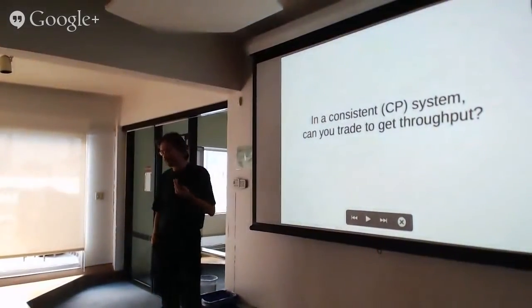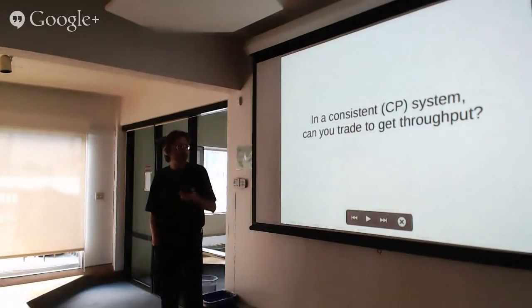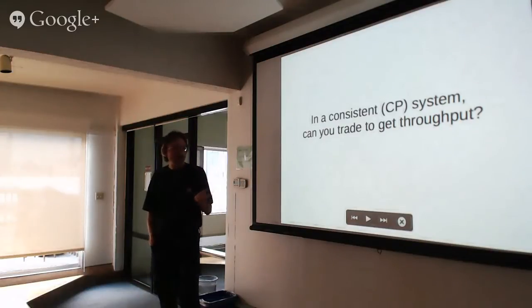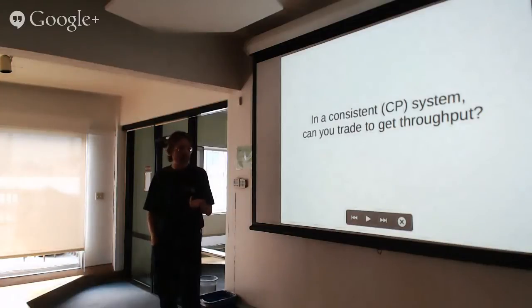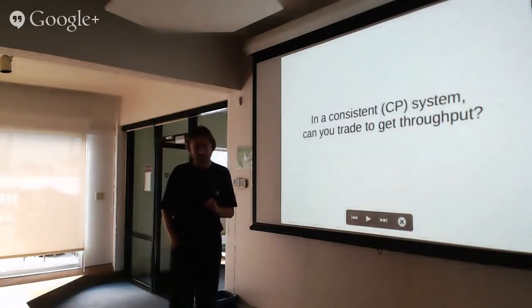Systems that are ill — Paxos-based systems, Zookeeper — don't have very good throughput. One of the things that Faber is trying to do is figure out what you can trade away in order to get better throughput for systems.